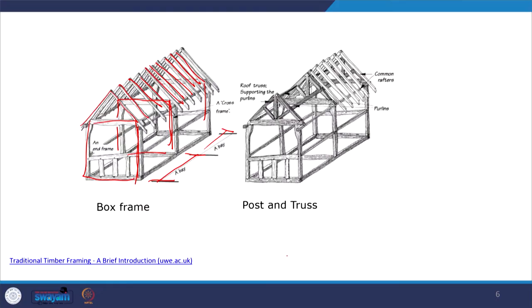The second model is post and truss. Here we can see the kind of truss which is a unified factor, with common rafters and purlins connecting the trusses together. The purlins play an important role because that is where all the trusses are connected together.